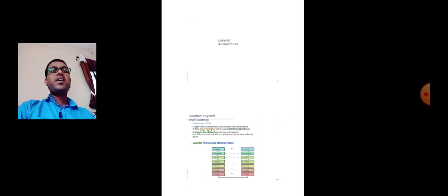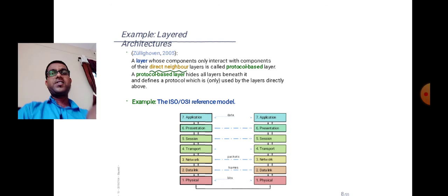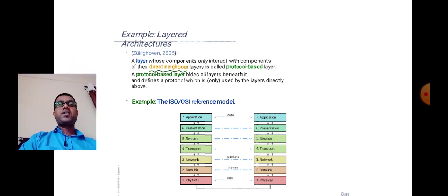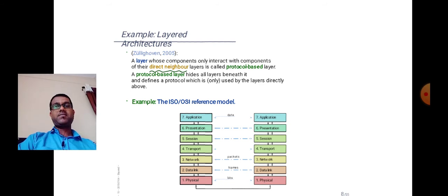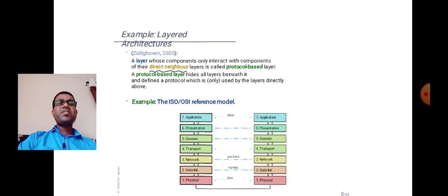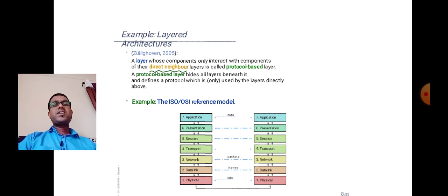For that there is layered architecture. We are quite familiar with the concept of layered architecture because at graduation level we have seen different types of models in software engineering, like the waterfall and spiral models. Also in computer networking we have seen models such as the ISO OSI model and the TCP/IP model, so we are familiar with layered technology.